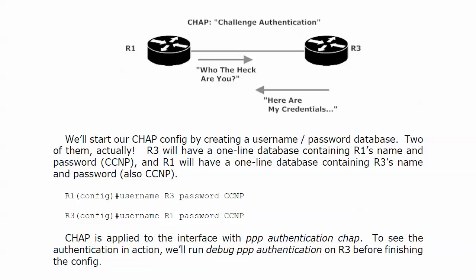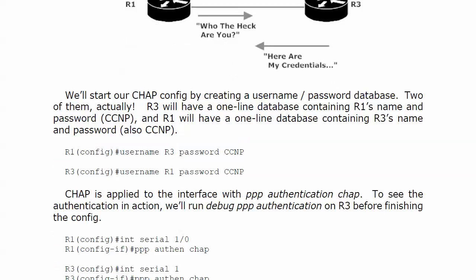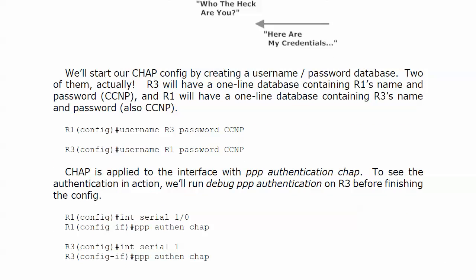The first thing we've got to do is set up a username-password database — two of them, actually, if we have each router authenticating the other. We could just have router 1 authenticating router 3 or vice versa; each authentication is a separate operation. In these configurations I have two-way authentication set up. Router 3 has a one-line database containing router 1's name and password, CCNP, and router 1 has a one-line database containing router 3's name and password, also CCNP. We put CHAP on the interface with PPP authentication CHAP.